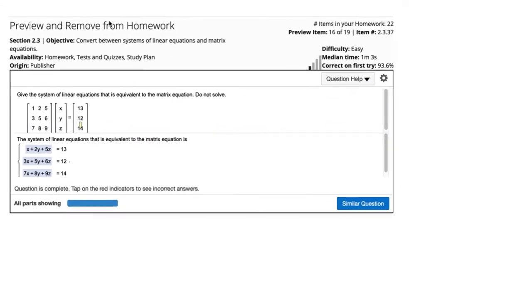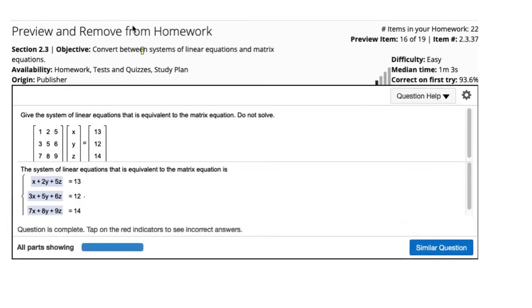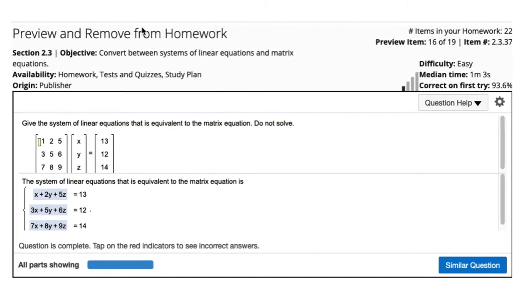Okay, a quick video on transforming between systems of linear equations and matrix equations. So basically, it looks like we have a 3 by 3 times a 3 by 1.